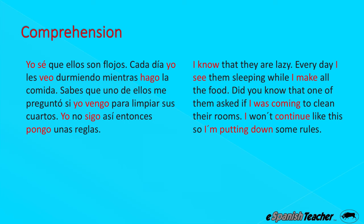"Yo no sigo así" — I won't continue like this. "Así" means like this. "Entonces" is a great word meaning so, or therefore. "Pongo unas reglas" — I'm putting down some rules. "Pongo" means I put or I set; "unas" means some; "reglas" means rules.